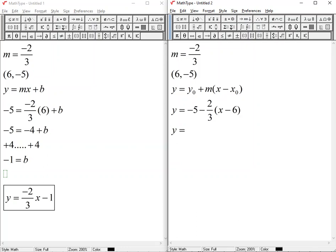Then we distribute. So this is y equals negative 5 minus we'll have our 2 thirds times x. And then negative negative, so 2 thirds times negative 6, which gets us 3 goes into 6 twice. So 2 times 2 is 4.